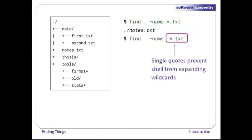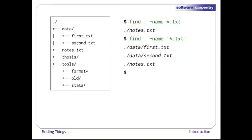Let's try again, but this time we'll put '*.txt' in single quotes to prevent the shell from expanding the star wildcard. This way, find actually gets the pattern, not the expanded file name notes.txt. Sure enough, this time the output is the names of all three text files.